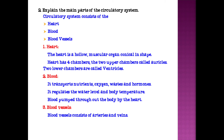Second question: Explain the main parts of the circulatory system. The circulatory system consists of the heart, blood and blood vessels. The heart is a hollow muscular organ, conical in shape. It has four chambers — two upper chambers called auricles and two lower chambers called ventricles. Blood transports nutrients, oxygen, waste and hormones. It regulates water level and body temperature. Blood is pumped throughout the body by the heart. Blood vessels consist of arteries and veins.